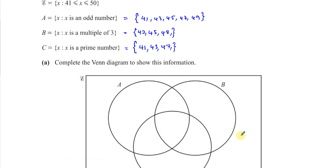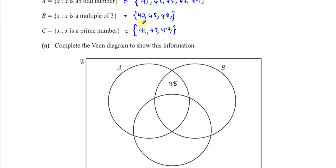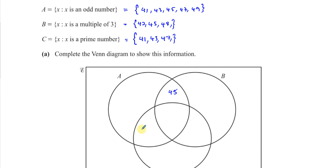Now we put all values into the Venn diagram. First, look for any number common to all three sets — there's nothing common to all three. 41 is in A and C but not B. 43 is in A and C but not a multiple of three. 45 is in A and B but not prime. 47 is in A and C. So the central intersection of all three is empty.